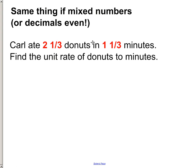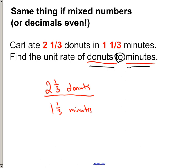Same thing's happening if we have mixed numbers here. We still want to find a unit rate of donuts to minutes. So two-and-one-third donuts stays on top and one-and-one-third minutes would stay on bottom. We've made the rate from the way they told us. And now we check to see if the second number is a one. It's not, so we've got to make it into a one by dividing it by itself. That makes it into a special unit rate for us.